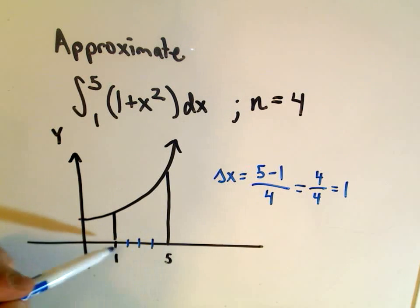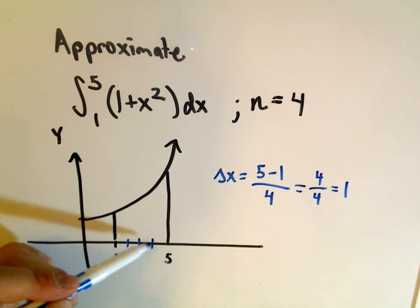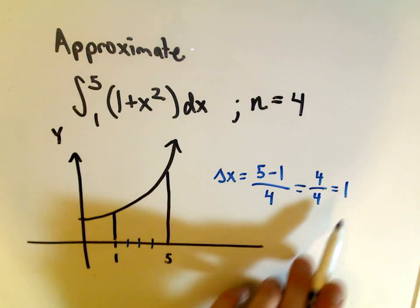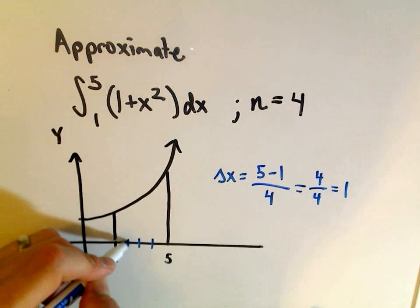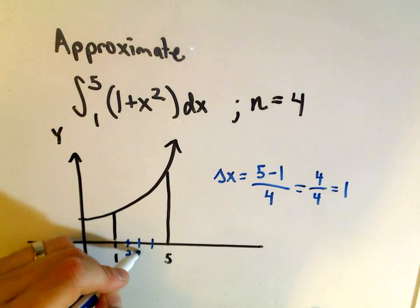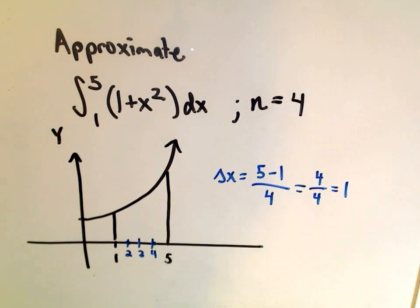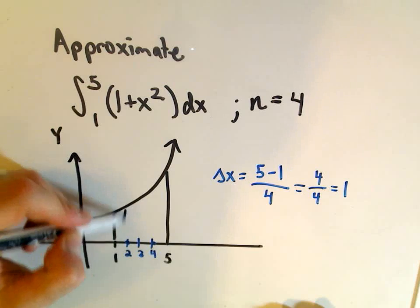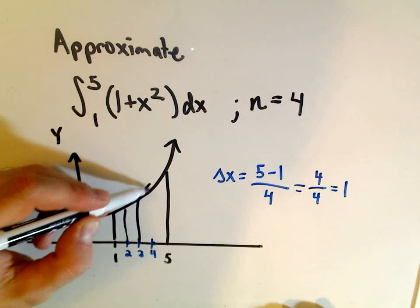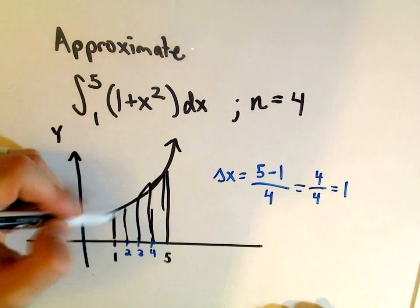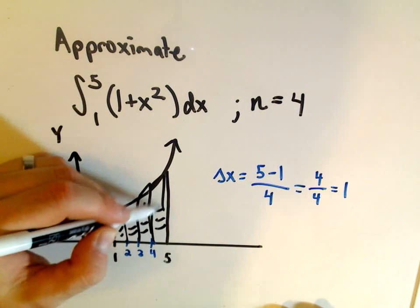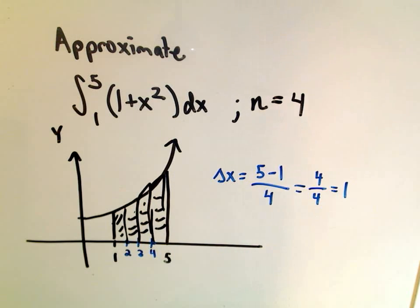We've chopped our interval from 1 to 5 up into 1, 2, 3, 4 pieces. Each one has width of 1, so you can see that the values would be 2, 3, and 4 of our points. And it says now what we're going to do is we're going to use trapezoids to just kind of cover this region and approximate the area underneath the curve using these trapezoids.